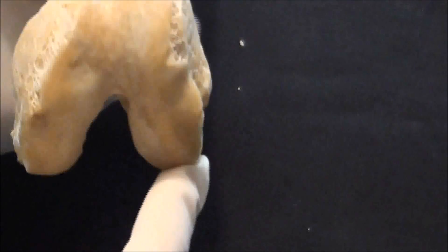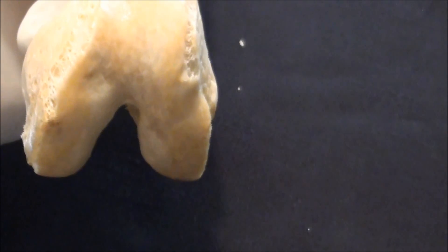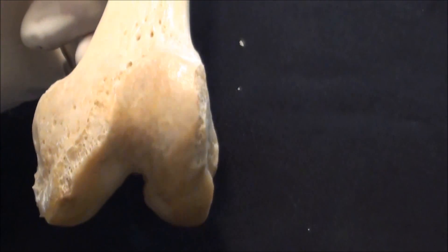Condyles are covered with hyaline cartilage and the femur together with tibia with a little bit of assistance of course coming from patella is responsible to form the knee joint.